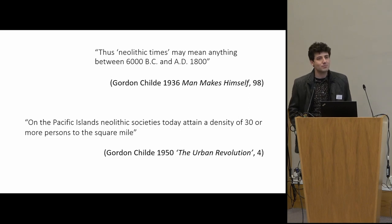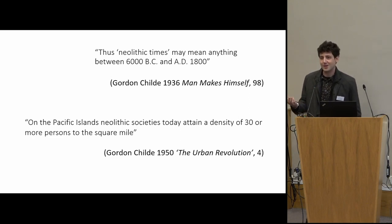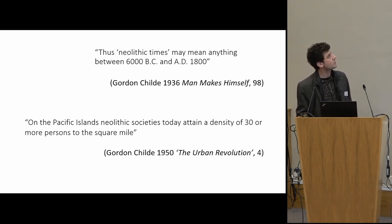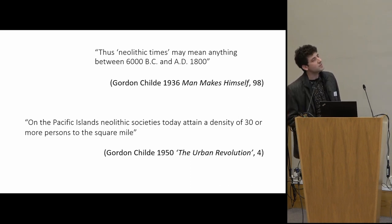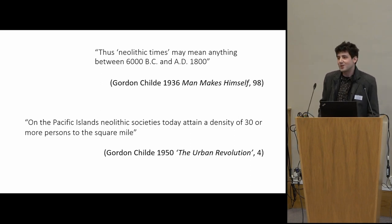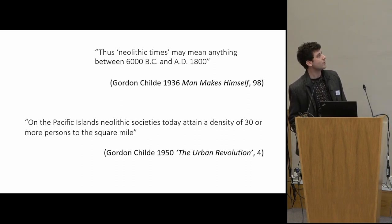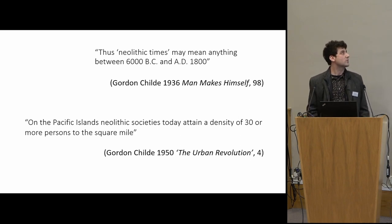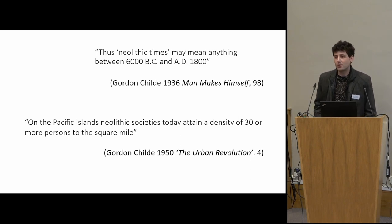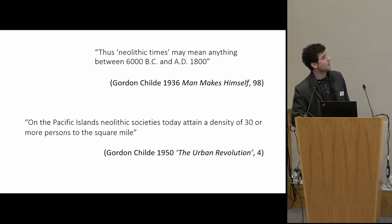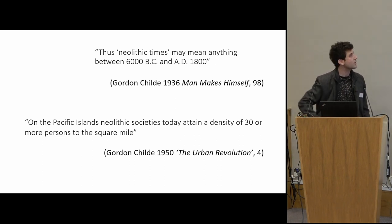I just wanted to highlight some interesting citations from Childe. In Man Makes Himself, he says: 'Thus, Neolithic times may be anything between 6,000 BC and 1,800 BC.' It's very interesting — what is he talking about? He's presumably talking about the arrival of the first settlers in Australia and New Zealand, and industrially produced goods being introduced in these regions, essentially polluting the local economies.